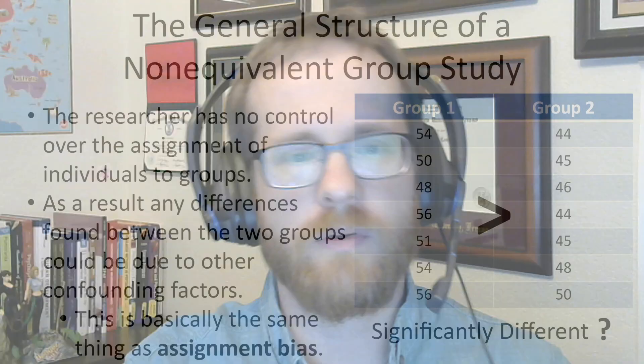The general structure of a non-equivalent group study is the same: the researcher has two groups and compares scores across those two groups. But there is a baked-in problem. Because we can't assign participants to groups, we're going to have something like assignment bias, where there might be a fundamental difference between participants in group one and group two that we don't want there. This could introduce serious confounds and make a pretty big hit on your study's internal validity.